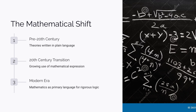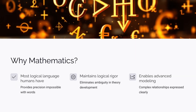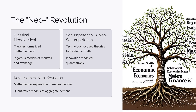Mathematics is, after all, the most logical language humans have. Adam Smith, the father of economics, explained economic theories in words in The Wealth of Nations. But nowadays, theories are developed using mathematics. Reflecting this trend, we add the prefix 'neo' to economic schools of thought. For example, what was once called the classical school of economics is now referred to as the neoclassical school after its theories were formalized mathematically.